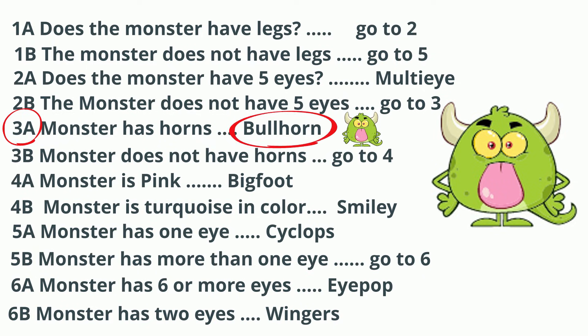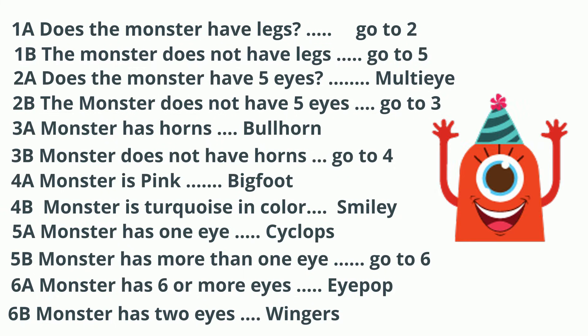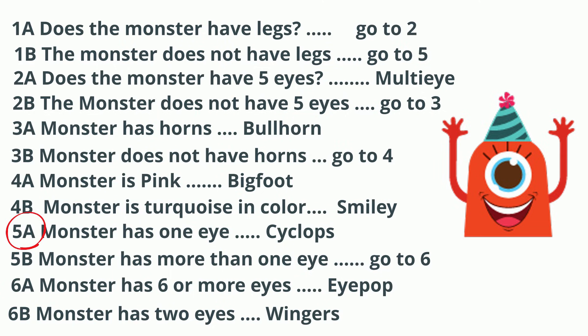Let's do one more. This one is red, has a party hat on, and only one eye. 'Does the monster have legs?' — no. 'The monster does not have legs' — so I go to 5. I start at 5a: 'monster has one eye' — yes, so it is Cyclops.